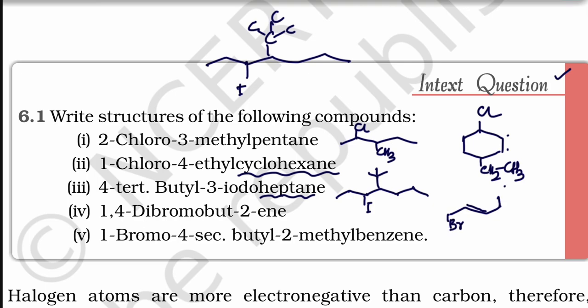1-bromo-4-secondary butyl-2-methylbenzene. He mentioned benzene is this compound. 1-bromo, this is bromine. 4-secondary butyl, here secondary butyl group is there.